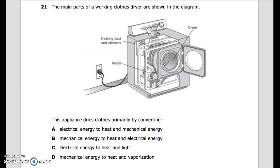Number 21: The main parts of a working clothes dryer are shown in the diagram. You have a heat duct and the element here, you have a motor here, and you have a dryer drum here. This appliance dries clothes primarily by converting: A. electrical energy to heat and mechanical energy. B. mechanical energy to heat and electrical energy. C. electrical energy to heat and light. D. mechanical energy to heat and vaporization.